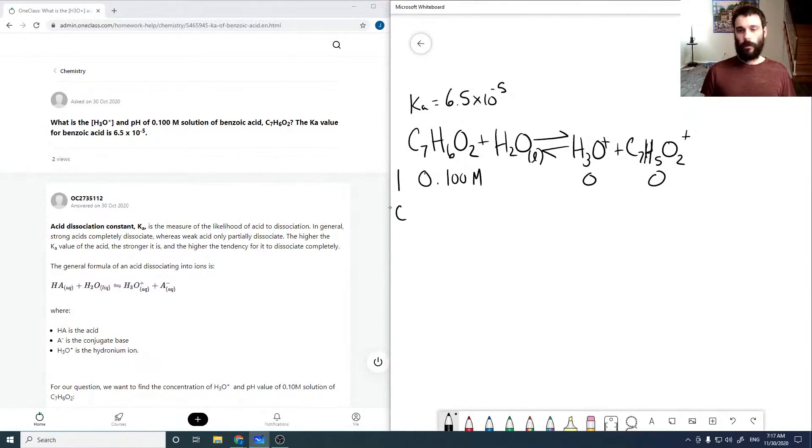So the change is going to be minus X. And everything is in a 1 to 1 molar ratio, so that means we're going to add X. And so at our equilibrium, we have 0.1 minus X, X, and X.